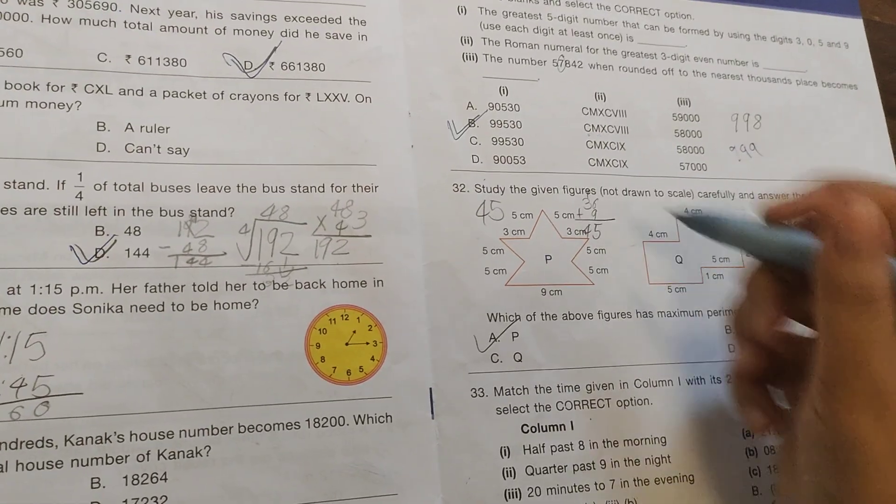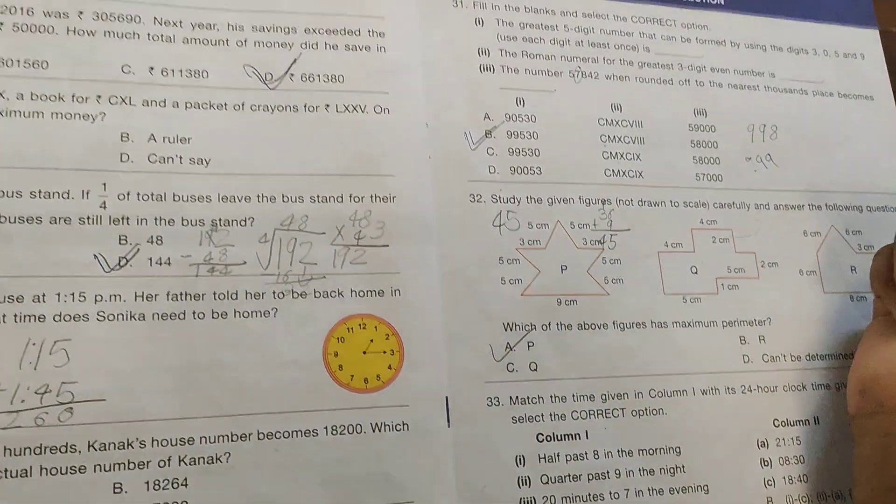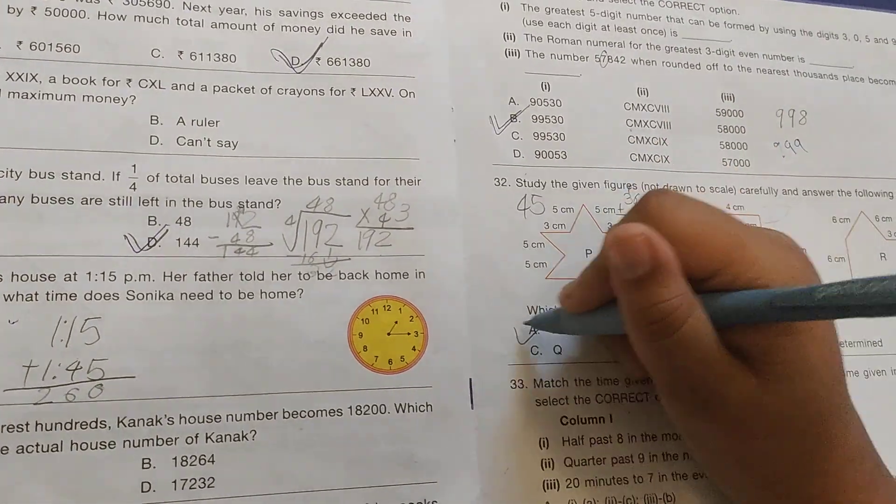Question 32: Study the given figure, not drawn to scale, and answer the question carefully. Which angle is the greatest? Option A - angle P is the greatest.